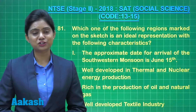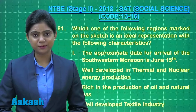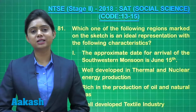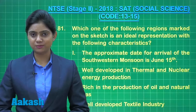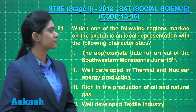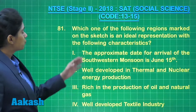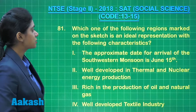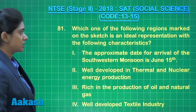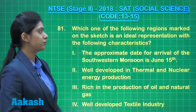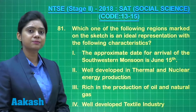Now let's discuss question number 81. Students, this question is a map question. So let's read what the question says: Which one of the following regions marked on the sketch is an ideal representation with the following characteristics?